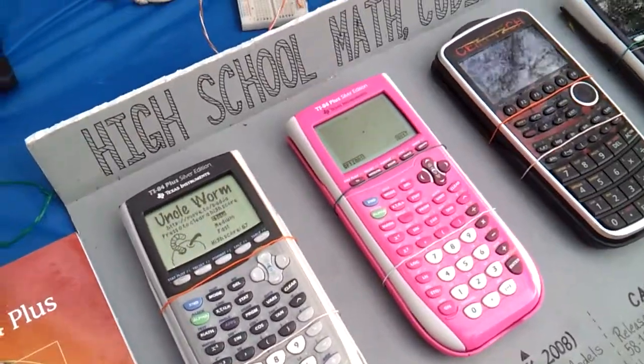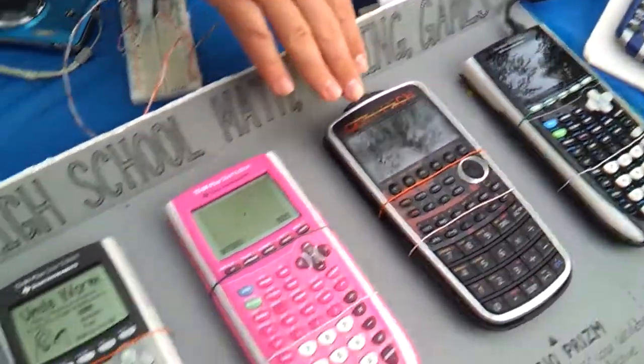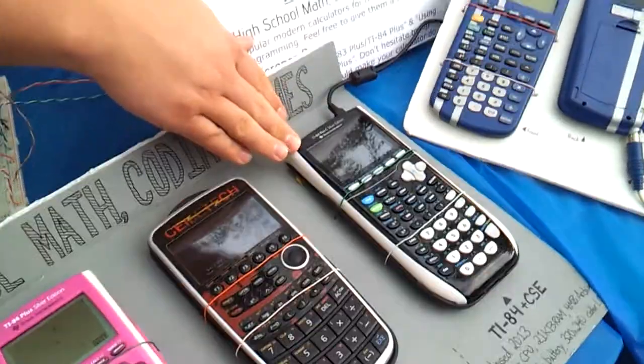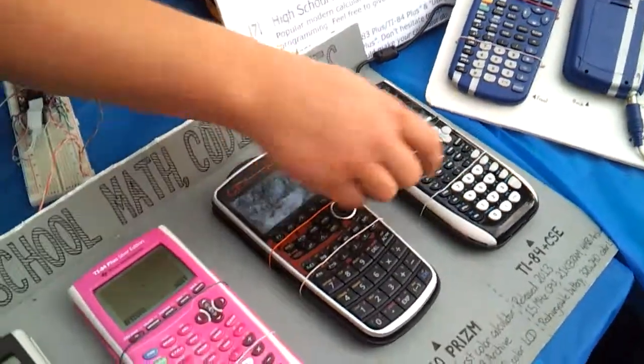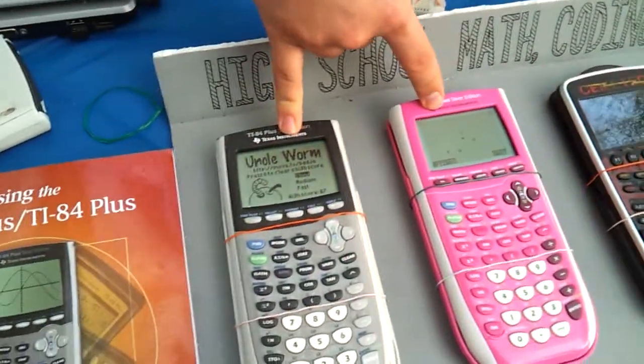Okay, so these are like games on... Are these like current calculators here? Yes. This is a Casio calculator, this one's pretty new. This is the latest T.I. calculator. It's a color screen one. Color screen. These are just your typical 84s.